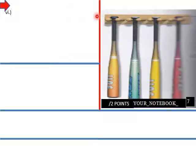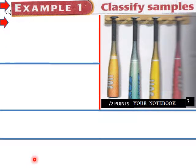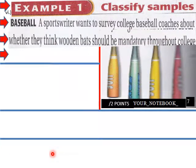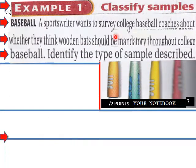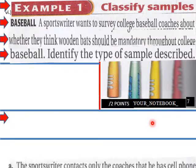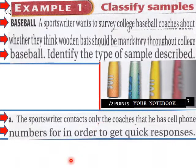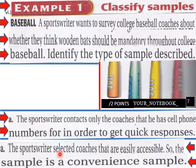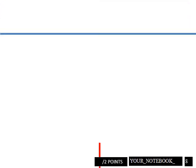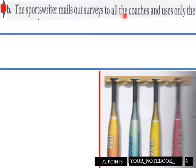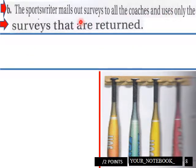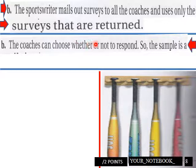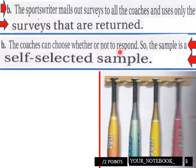For example one, classifying examples: a sports writer wants to survey college baseball coaches about whether they think wooden bats should be mandatory throughout college baseball. Identify the type of sample described. The sports writer contacts only the coaches he has cell phone numbers for in order to get quick responses — the sports writer selects coaches that are easily accessible, so the sample is a convenient sample. In another case, the sports writer mails out surveys to all the coaches and uses only the surveys that are returned. The coaches can choose whether or not to respond, so the sample is a self-selected sample.